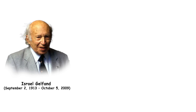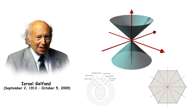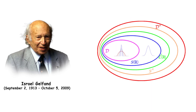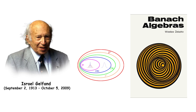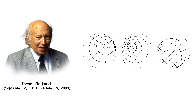Israel Gelfand was a Soviet mathematician who made pivotal contributions to various fields, including functional analysis, representation theory, and algebraic geometry. He developed the Gelfand representation, which is fundamental in the theory of Banach algebras, and the Gelfand-Naimark theorem, which characterizes commutative C*-algebras. His work has had lasting impacts on both pure and applied mathematics.